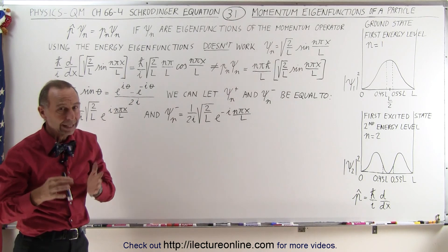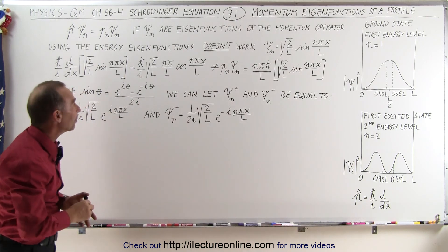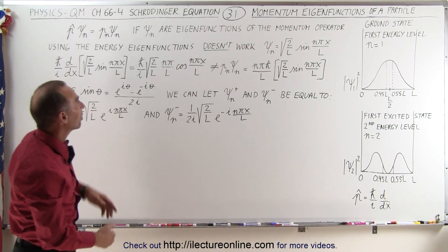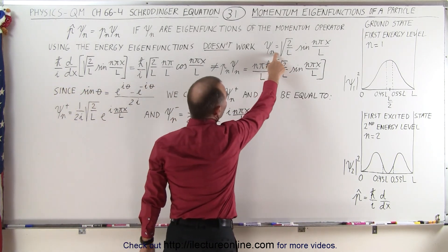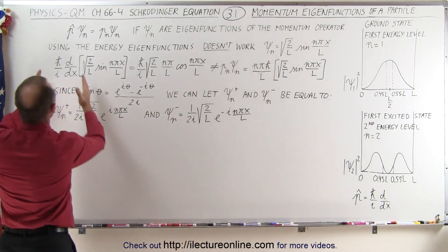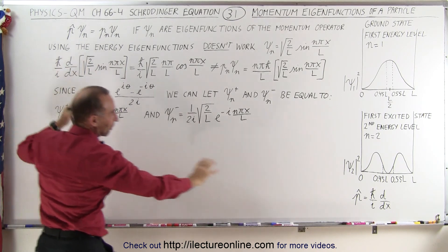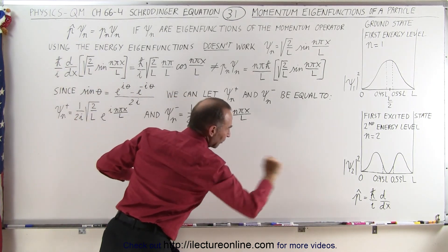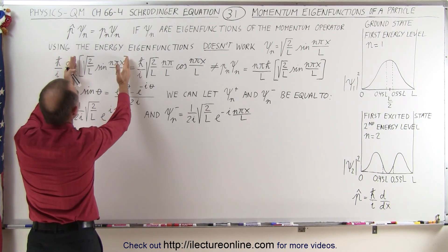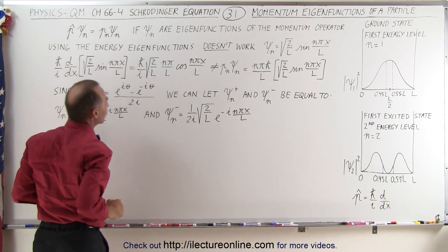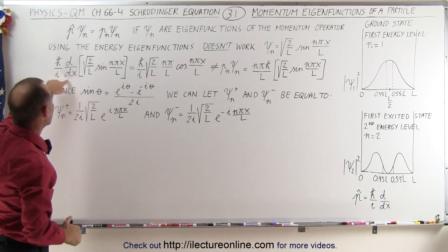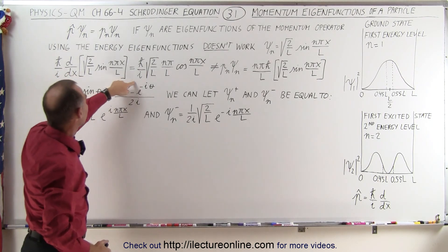To show you why that has to be the case, let's operate on a different eigenfunction — in this case, let's operate on the energy eigenfunction. So we have the momentum operator, defined right there. We're going to operate not on the momentum eigenfunction, but on the energy eigenfunction. When we do that, we get h-bar over i.